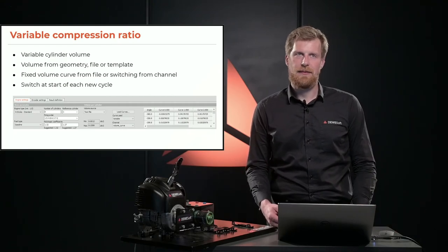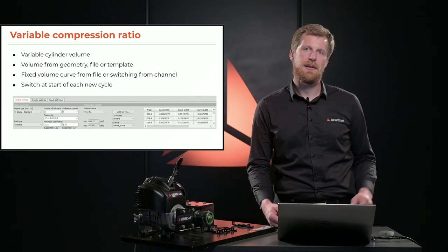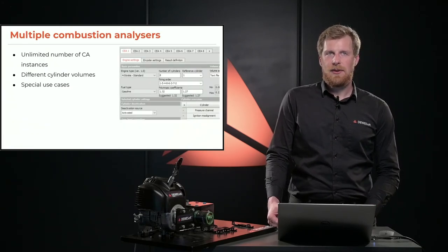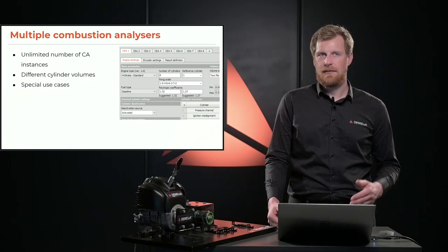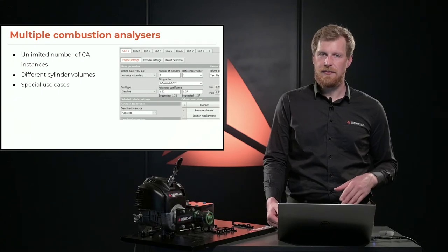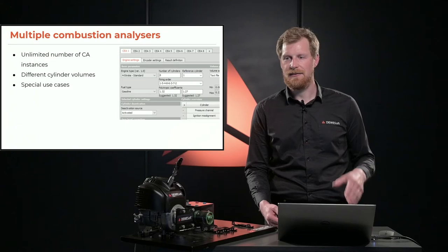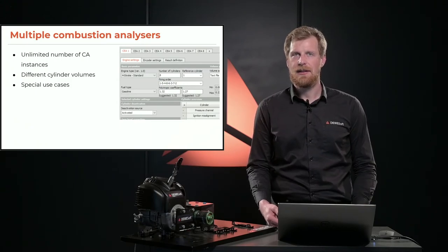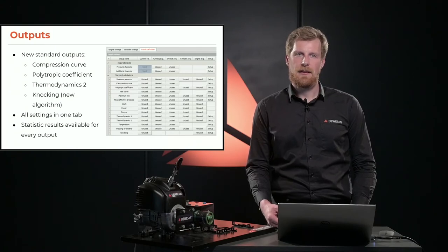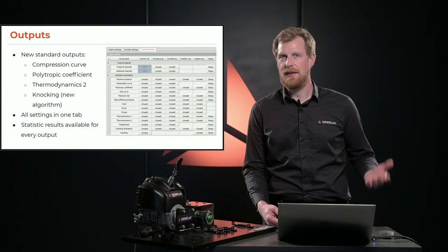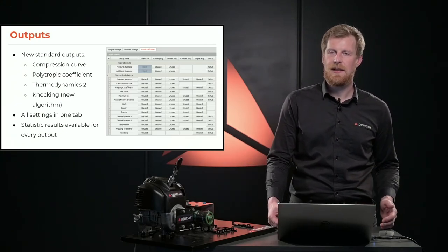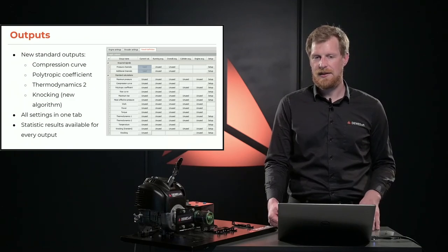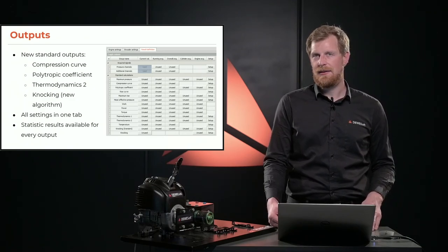The module is also prepared for variable compression ratio engines — we can input different volume curves and switch between them based on ECU data directly. Multiple combustion analyzers can be run simultaneously, which is useful for multistage compressors with different geometries where each cylinder can have its own combustion analyzer. All outputs are available in a single place with a click of a button. You don't have to input any formulas, but you can add statistics, math formulas, or even write C++ scripts for custom calculations.